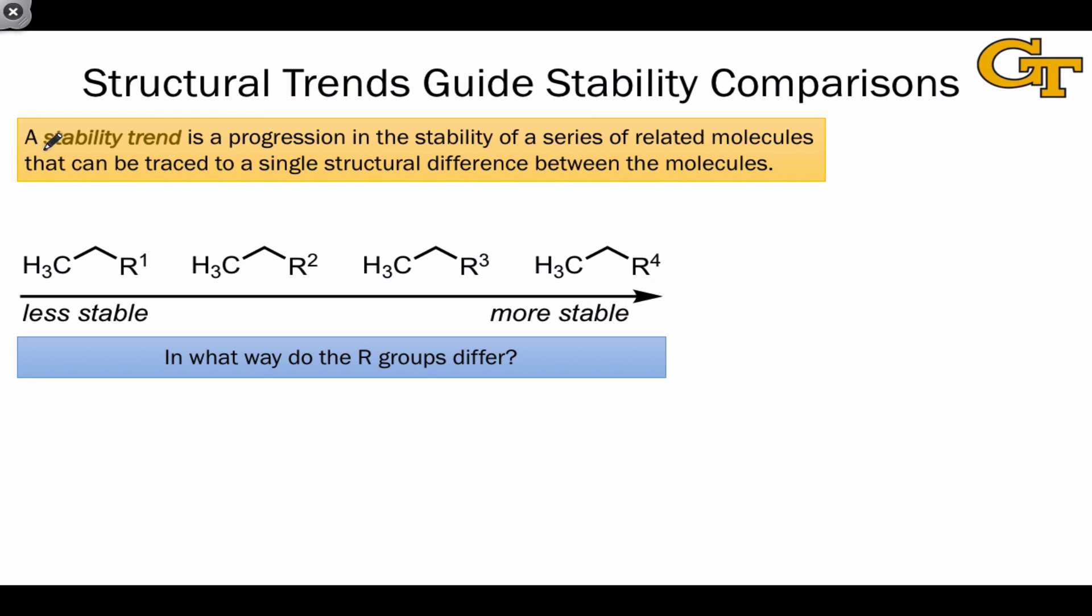What we call a stability trend is a progression in the stability of a series of related molecules. We can trace that progression to a key difference between the molecules, represented here in general as a change from R1 to R2 to R3 to R4.